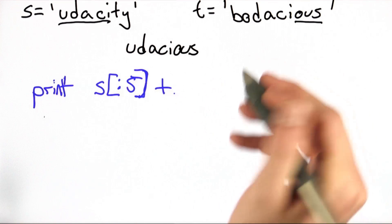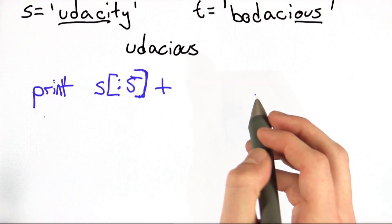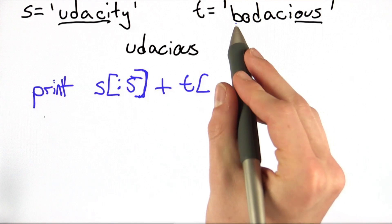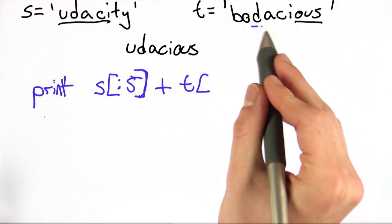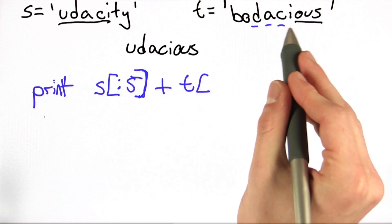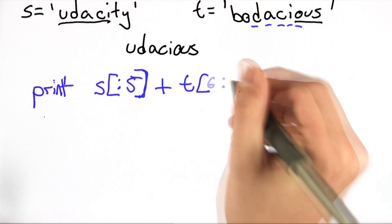Now we want the rest to come from t, which is the last three characters. So we're not going to start at the beginning. We're going to start at the 6th character, 0, 1, 2, 3, 4, 5, 6. And we want to go to the end.